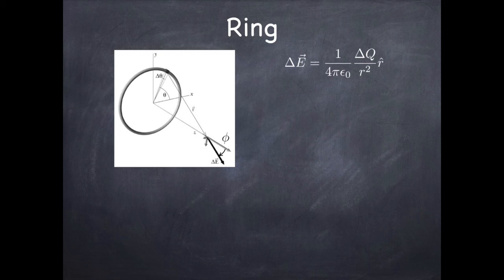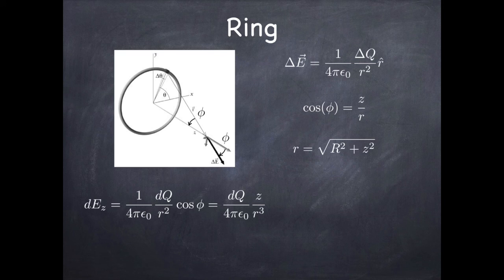So in the end all we care about is the z component. Notice there's an angle between the electric field chunk delta-E and the z axis — let's call that angle phi. The cosine of phi is z divided by r, the distance between the chunk and the point on the axis. So the z component delta-Ez equals the magnitude (1/r²) times cos(phi), which gives dq over 4πε₀ times z over r³. Two factors of r come from the 1/r² dependence and the other factor of r comes from the cosine of phi.